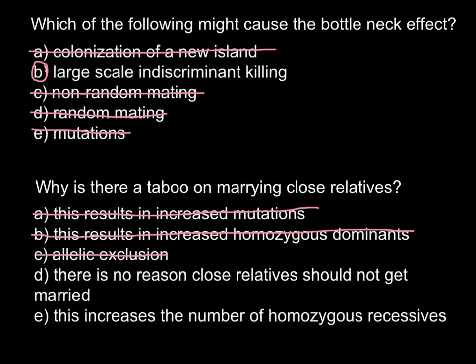Now we have only two answers left: D and E. Answer D says there is no reason close relatives should not get married. This is also an incorrect answer, because there is a reason. And that reason is answer E.